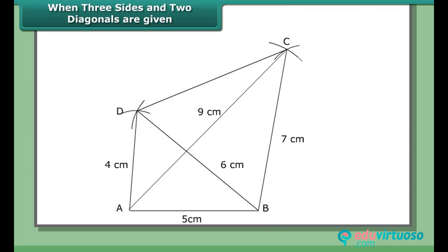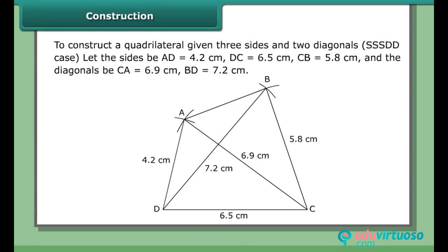ABCD is the required quadrilateral. Construction: To construct a quadrilateral given three sides and two diagonals — the SSSDD case. Let the sides be AD = 4.2 cm, DC = 6.5 cm, CB = 5.8 cm, and the diagonals AC = 6.9 cm and BD = 7.2 cm. The two triangles we can construct to complete the quadrilateral are BCD and ACD.